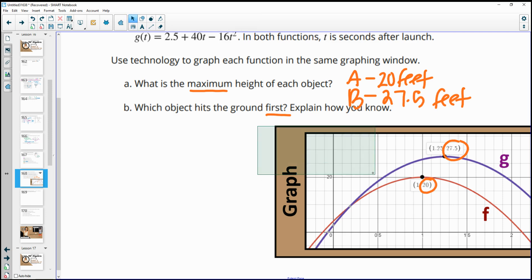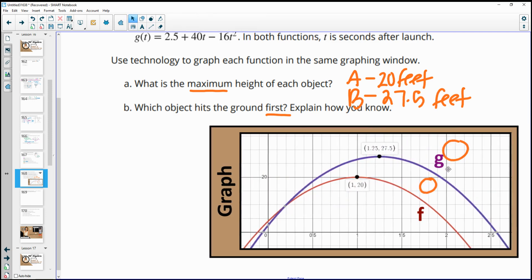I've got to move this out a little bit more. So we can see where it hits the ground, and so the one that hits the ground first is the F function, which is object A. So we see that one hitting before the other one, hitting it like a little bit over, I don't know, 2.1 seconds.